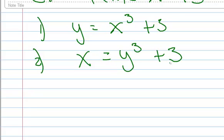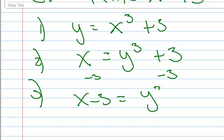All you do is switch the x and the y's, leave everything else the same. Third step, we're going to solve for y. So I'm going to subtract 3 from both sides. So I have x minus 3 equals y cubed.